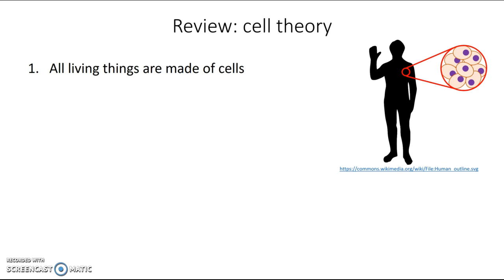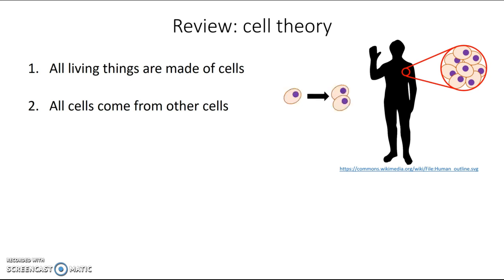The second part of cell theory is that all cells come from other cells. So you may be many cells now, but if we went back to the very beginning of you, we would find that you were just one cell originally, and then that one cell became two cells, and those two cells became four, four became eight, until one day you were the many trillions of cells you are today.